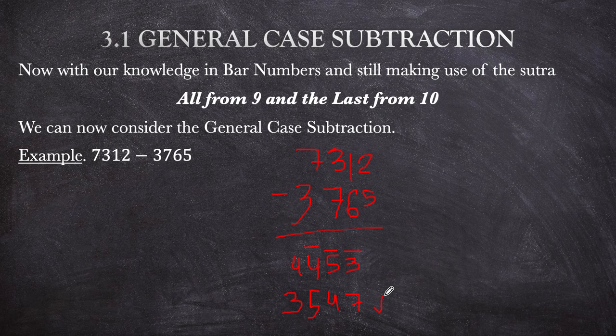Notice that all the answers are not that rigorous to work out. We just need the essence of 'all from 9 and the last from 10' and the concept of bar numbers in order to perform this subtraction. It's now general — no more carrying or borrowing of digits. It's a straight subtraction, cleaner as you can see.